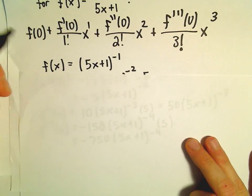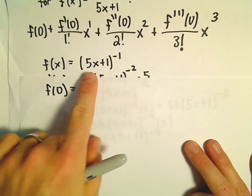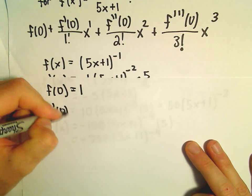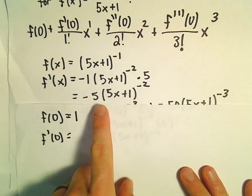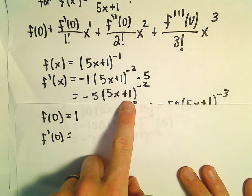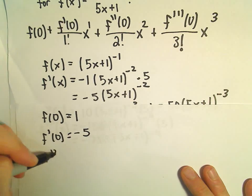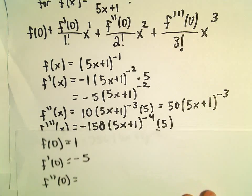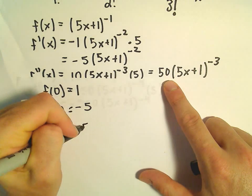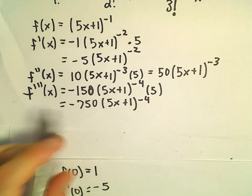Now we compute the values by plugging in 0. f(0): 5 times 0 gives 1 to the negative first, so that's just 1. f'(0): we get 1 to the negative second, which is 1, so we're left with negative 5. f''(0): plugging in x=0, we're left with 50. And f'''(0) is negative 750.